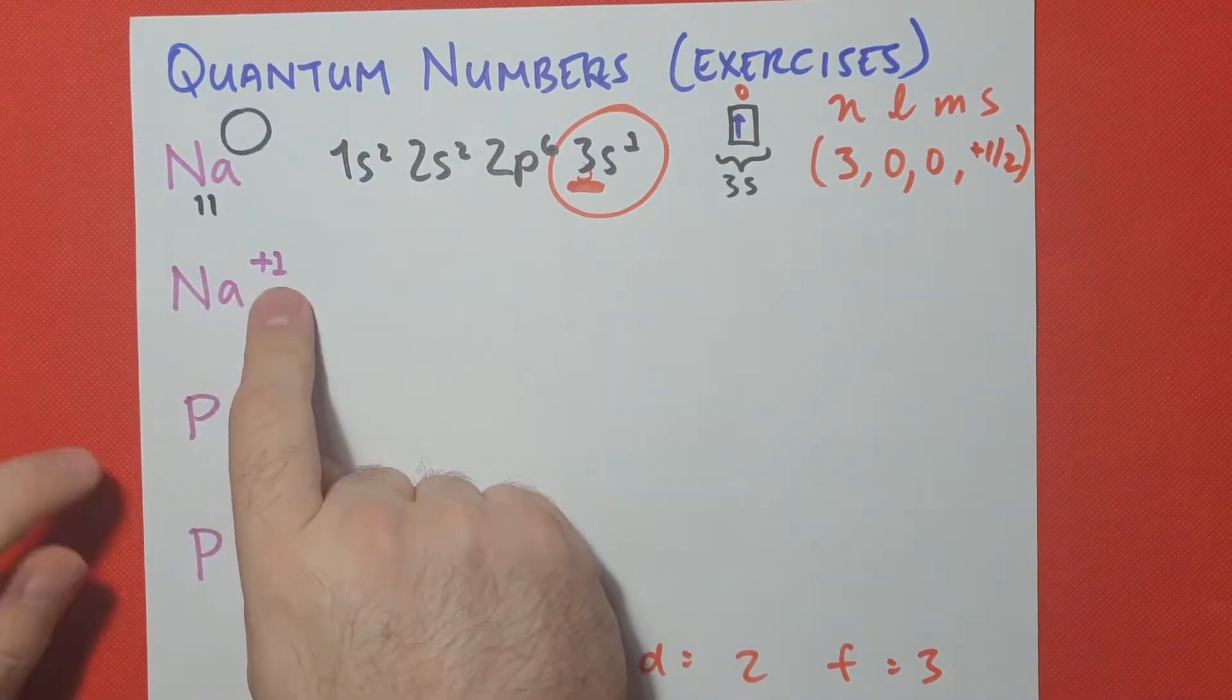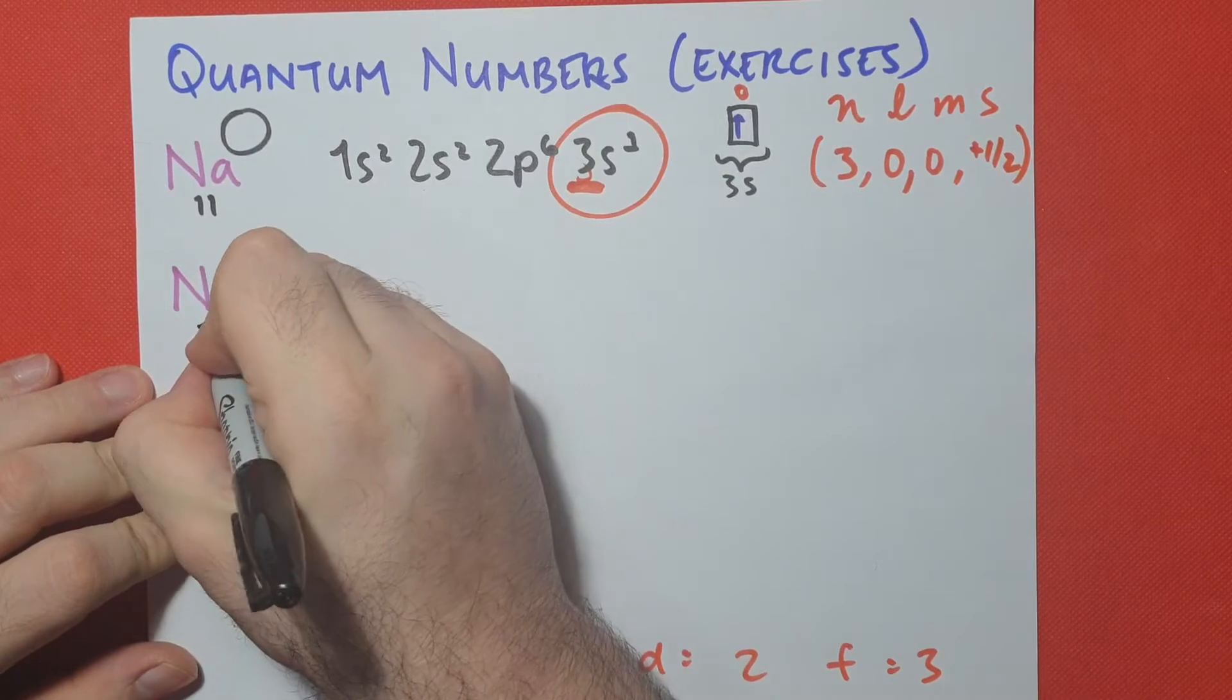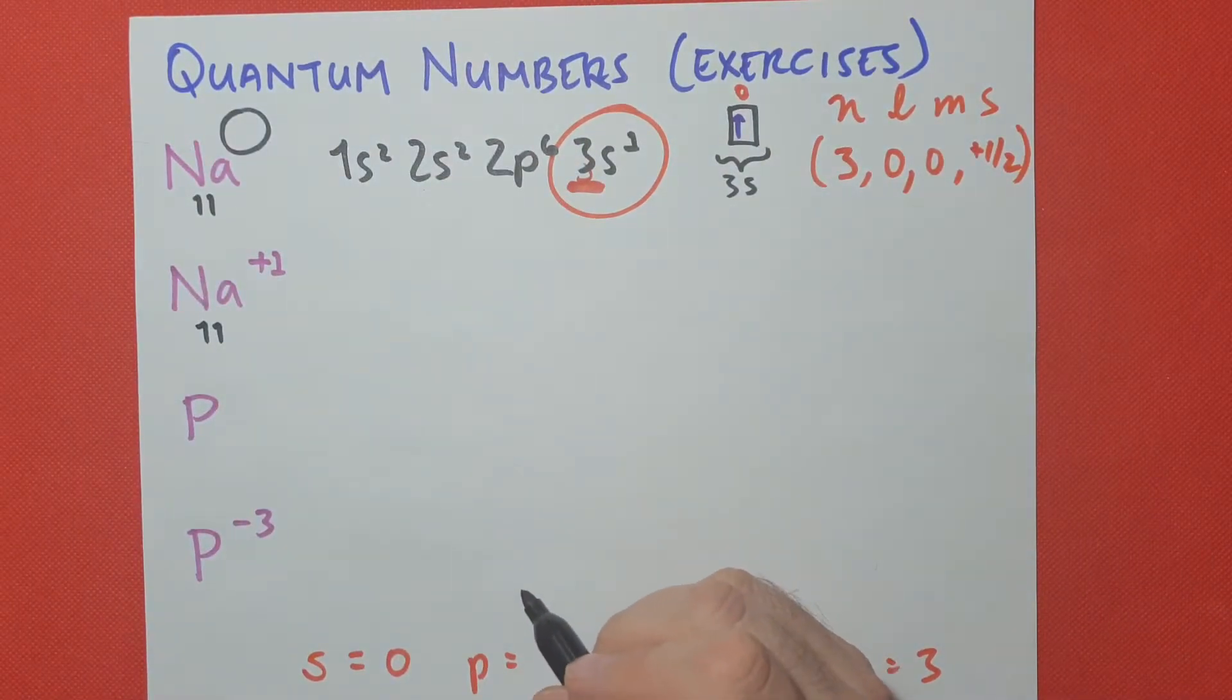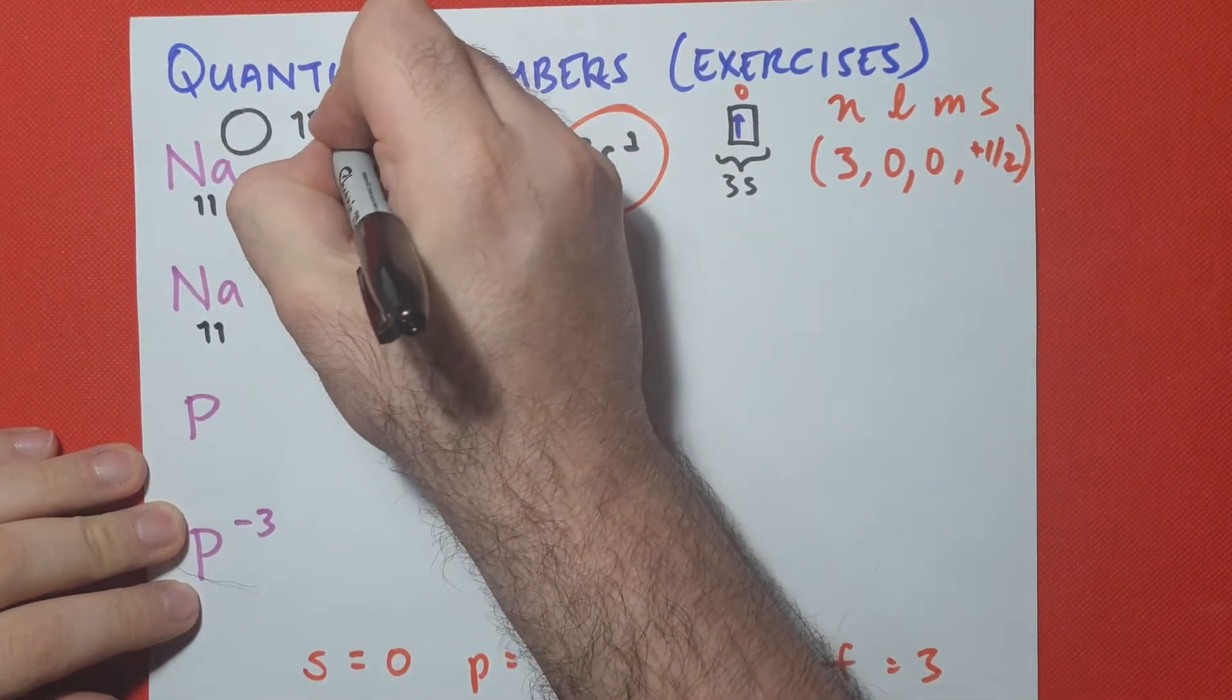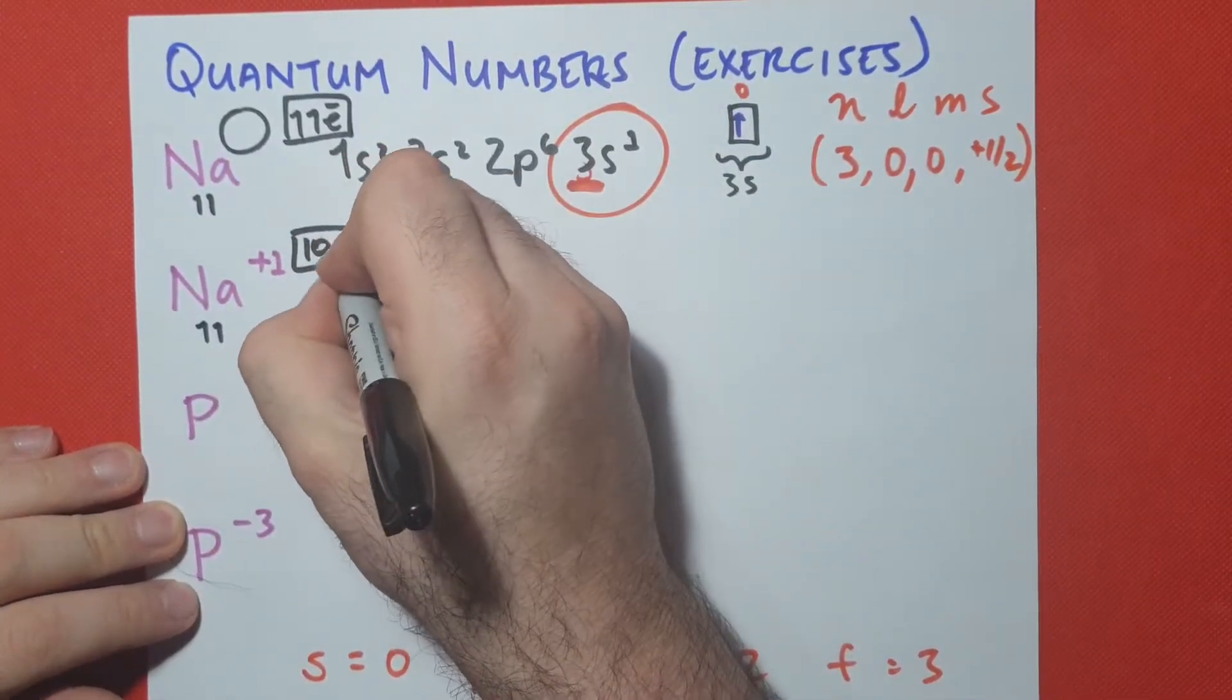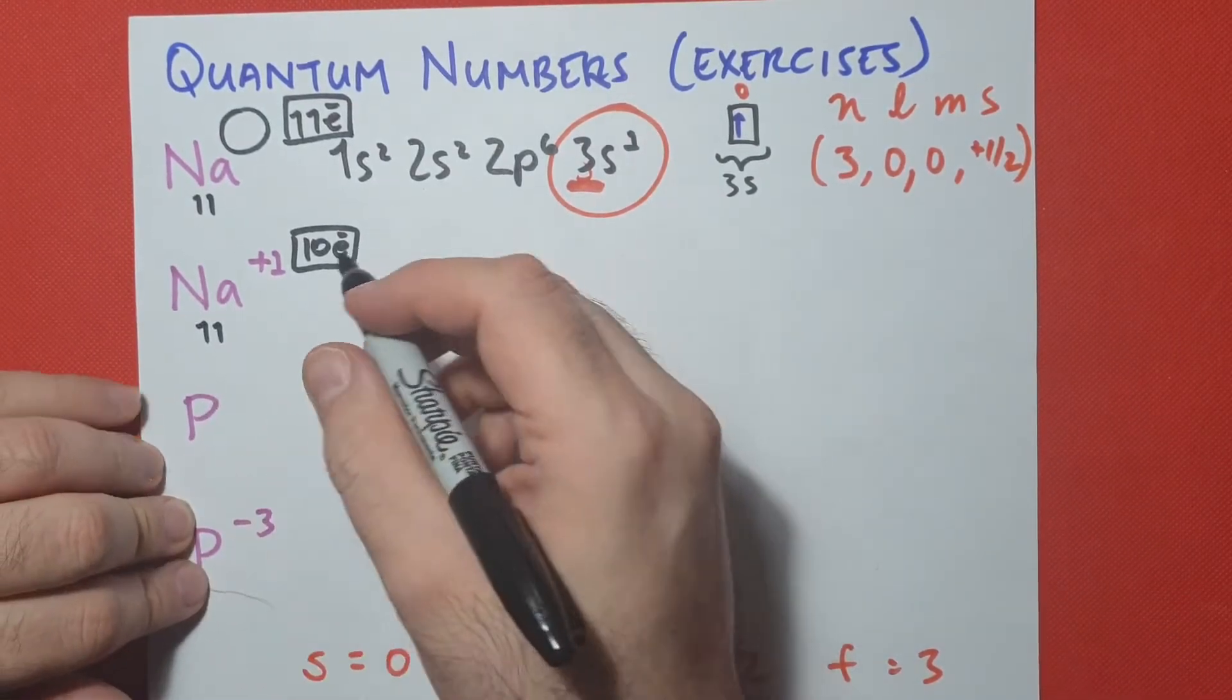Now, when we look at sodium plus 1, remember, this means that it's a cation, so that means that it lost one of its electrons. So even though its atomic number is still 11, now how many electrons do we have? Here we had 11 electrons, and here we're going to have 10 electrons. Why? Because it's more positive, it lost one electron, so we have 10.